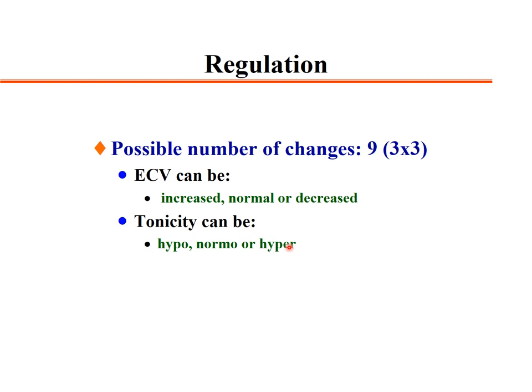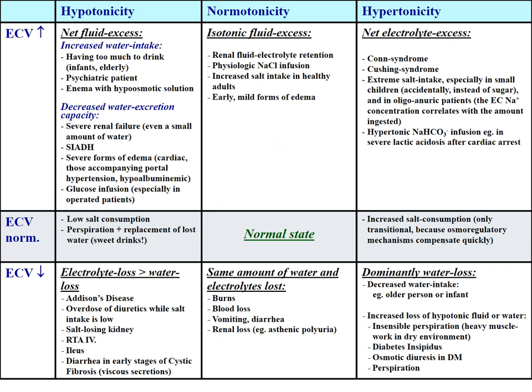Let's examine these 9 different classes. The rows represent increased extracellular volume, and the columns represent hypotonicity/hypoosmolarity, normal osmolarity, and hyperosmolarity.